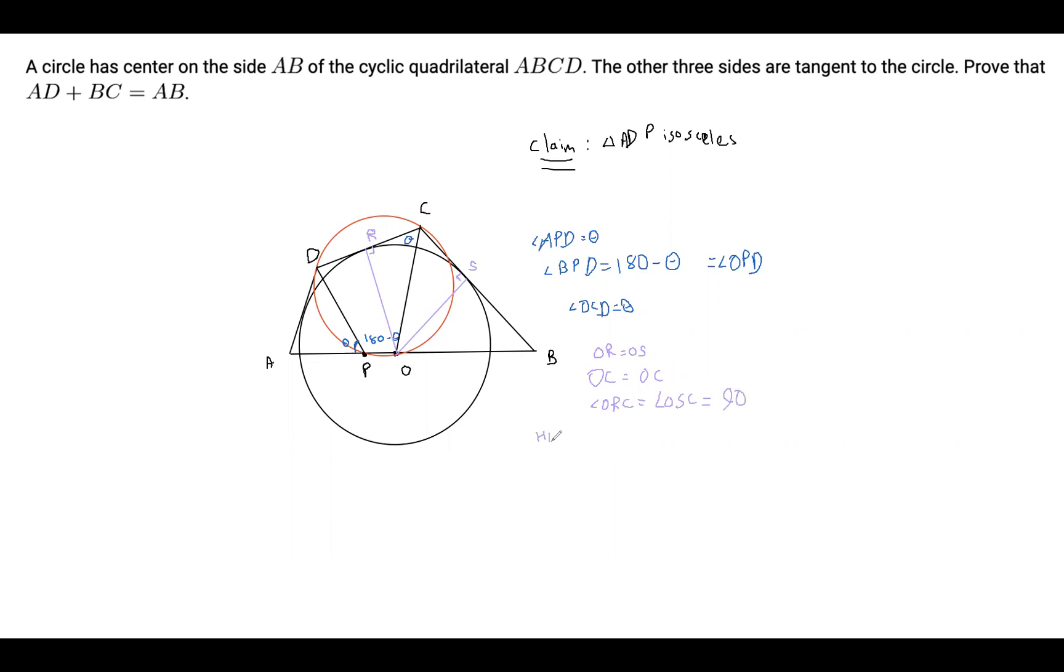And we know that OR is equal to OS, which is the radius of this circle tangent to AD, DC, and CB. We also have OC is equal to itself. And angle ORC equals angle OSC equals 90 degrees. So by hypotenuse-leg congruence, triangle ORC is congruent to triangle OSC. So we can correspond congruent parts. And we get angle OCR equals angle OCS. But remember angle OCR was angle OCD because CR and D are collinear. So this angle over here is also theta. So angle DCB is 2 theta.